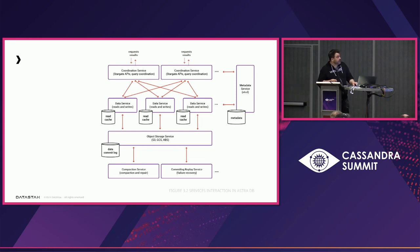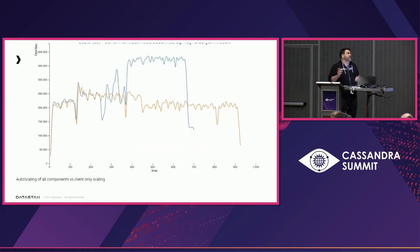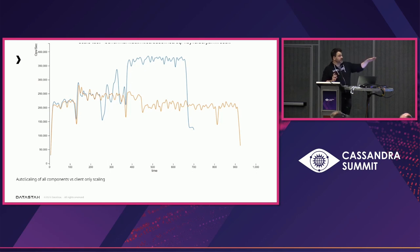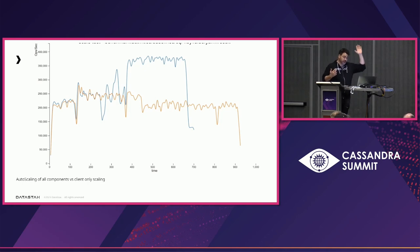We have our coordination tier, data tier, metadata tier, and a bunch of auxiliary services. Here's an example plot of our scaling when we were initially launching — the clients are in orange, and this is actually scaling up the nodes which source the data from S3. You can see within a few seconds you're able to 2x your throughput, and the nice thing is you can actually scale it back down.